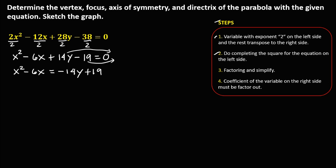Next, complete the square for the equation on the left side. Take the coefficient of x, which is 6, divide by 2 to get 3, then square it to get 9.